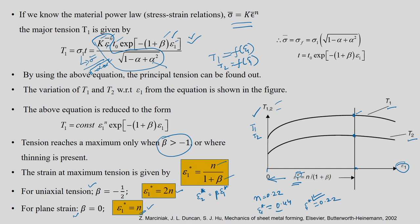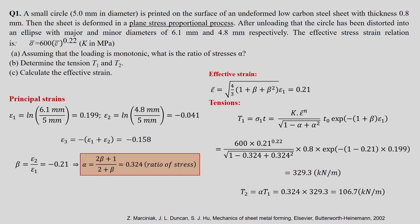The star notation indicates that the material is at some sort of instability or maximum load — maximum tension is reached. We will stop this theory part here and solve two problems. Problem 1: a small circle of 5 mm diameter is printed on the surface of an undeformed low carbon steel sheet with thickness t_0 equals 0.8 mm.